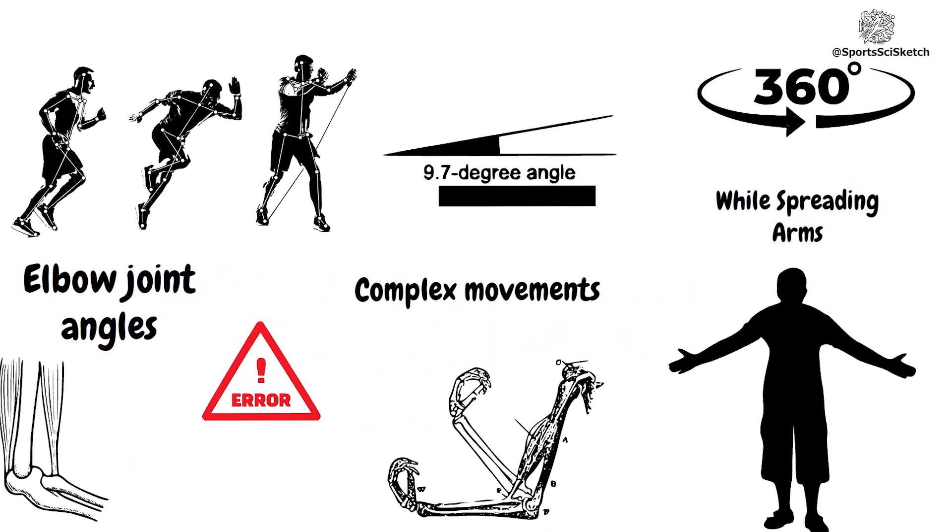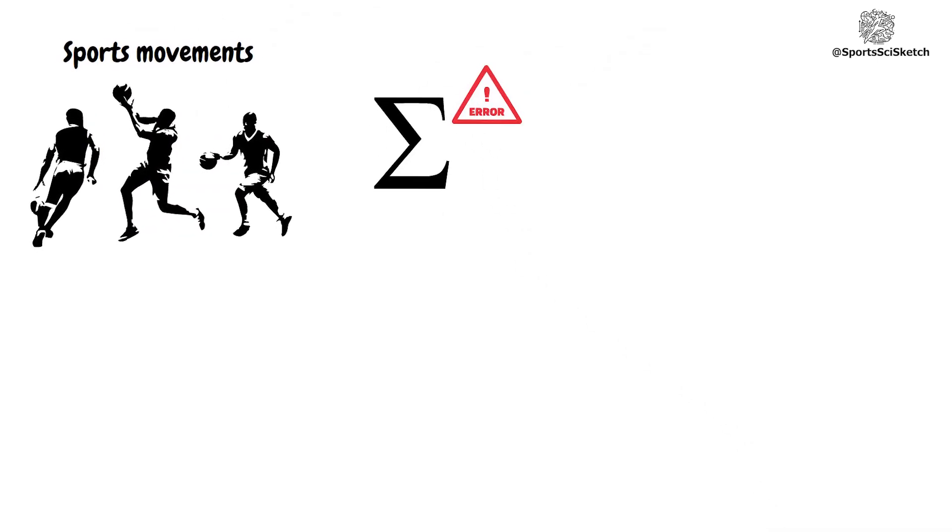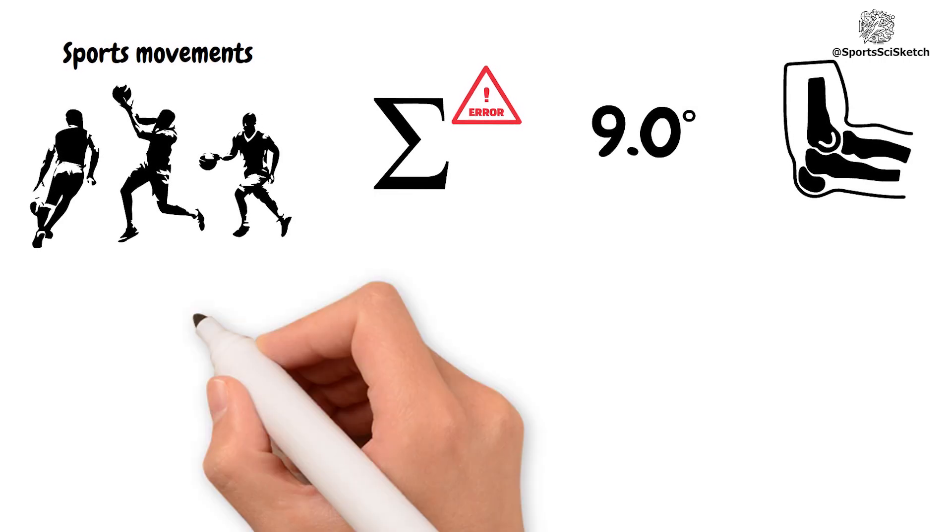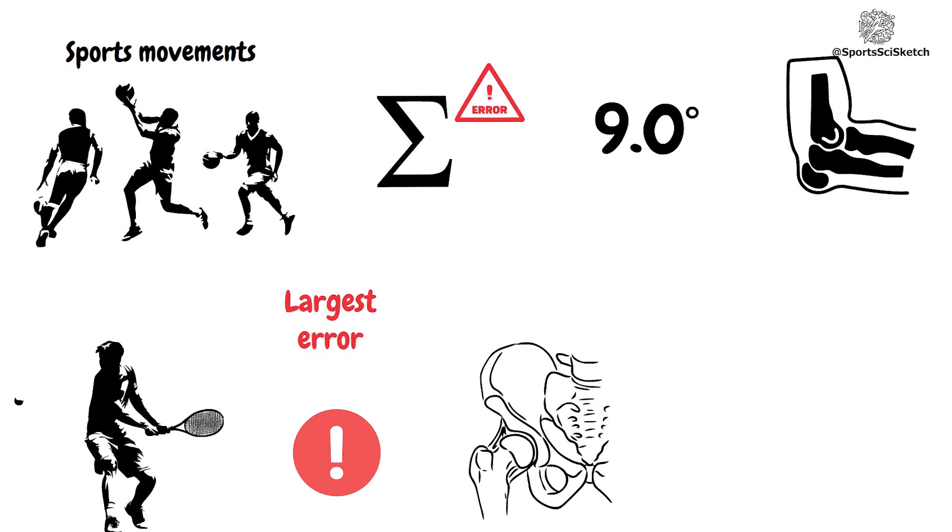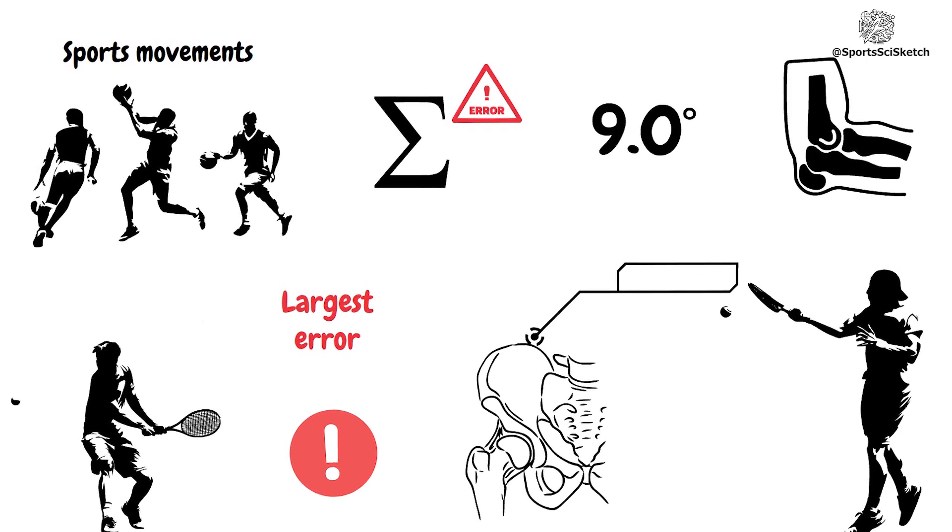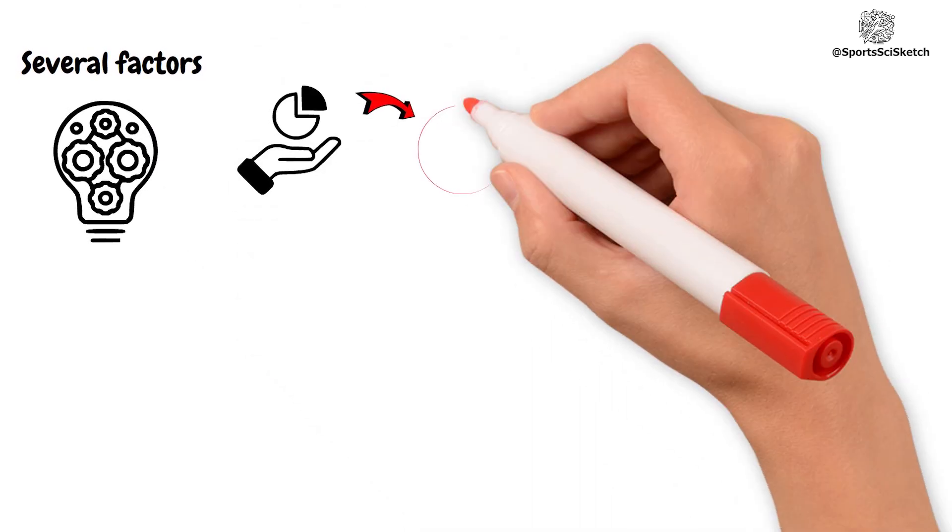For sports movements, the mean error was 9.7 degrees. The left elbow joint in the tennis backhand swing had the largest error, while the right hip joint in the tennis forward swing had the smallest. Several factors contributed to the errors.